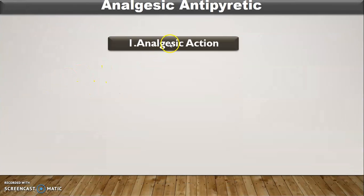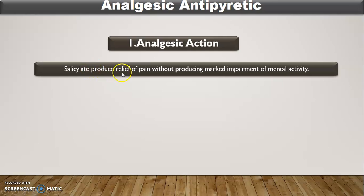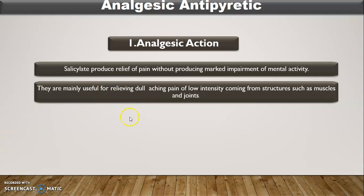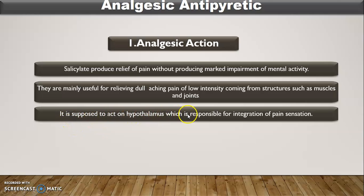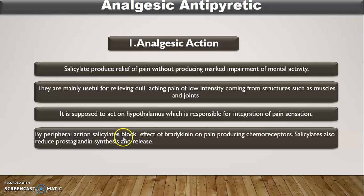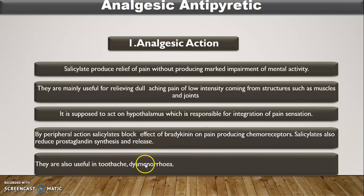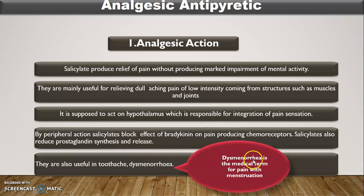The first effect of salicylates is analgesic action. Salicylates produce relief of pain without causing marked impairment of mental activity. They are mainly used for relieving dull aching pain of low intensity coming from structures such as muscles and joints. They are supposed to act at the hypothalamus, which is responsible for the integration of pain sensation. By peripheral action, salicylates block the effect of bradykinin on pain-producing chemoreceptors. Salicylates also reduce prostaglandin synthesis, and are useful for toothache and dysmenorrhea.